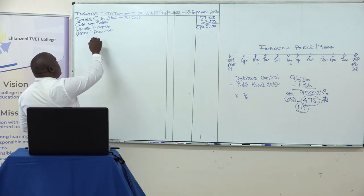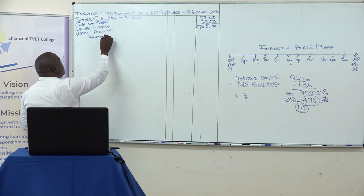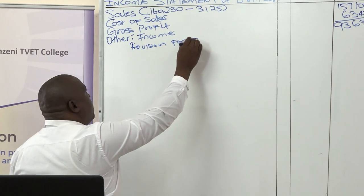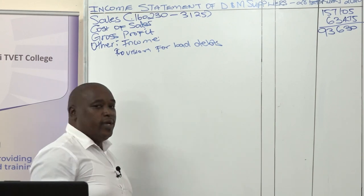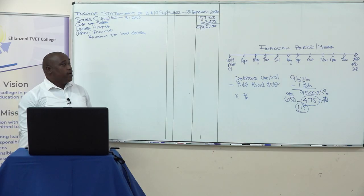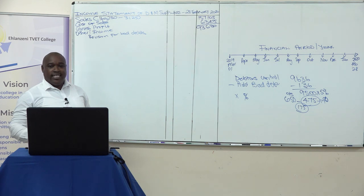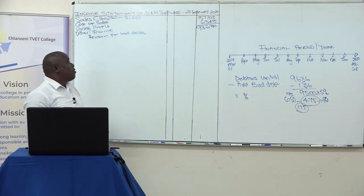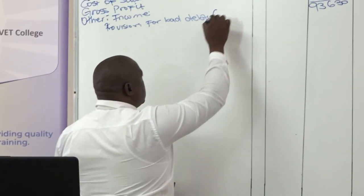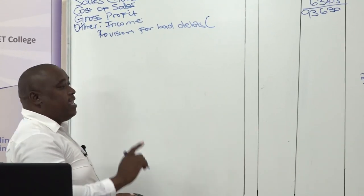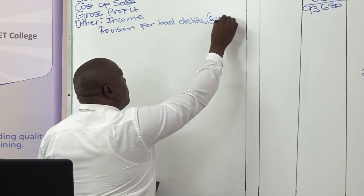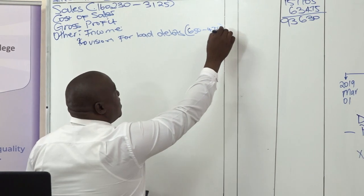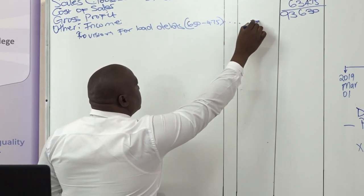The first income to go in is our provision for bad debt adjustment. When doing the income statement, remember to indicate each calculation inside brackets. In this case, we got 175 because 650 minus 475 equals 175.